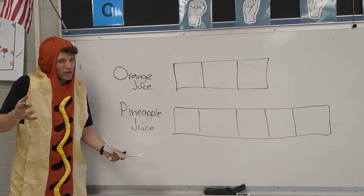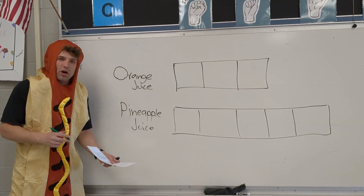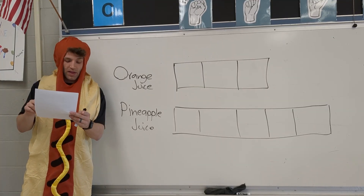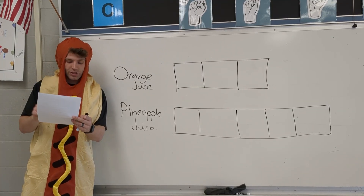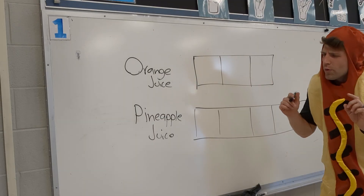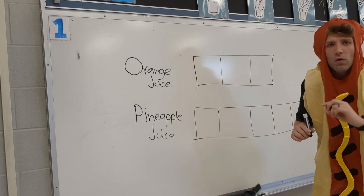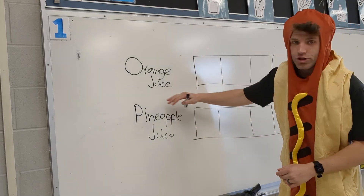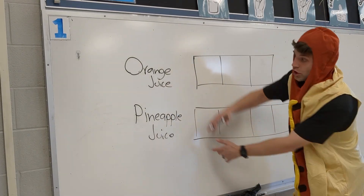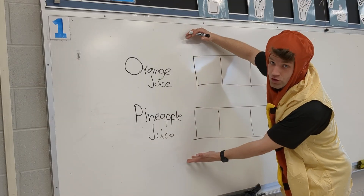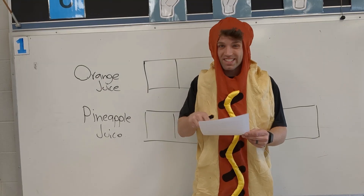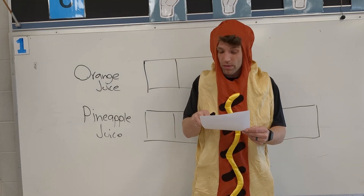Then we have to look at what we did to our ratio. It says they wanted to make a batch using 15 cups of orange juice. We must think: what does this 15 go with? Our orange juice, our pineapple juice, or our total juice? Well, it goes with our orange juice. Why? Because it says so in the word problem.